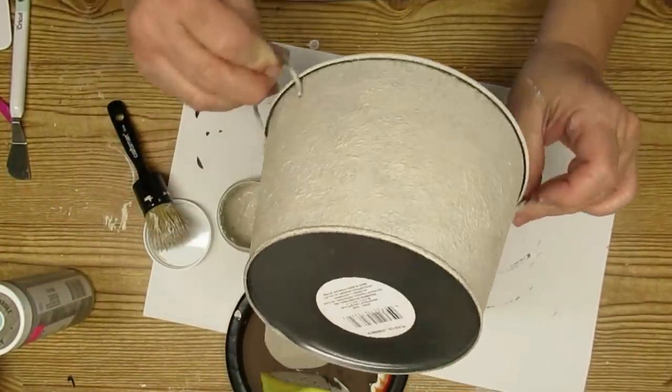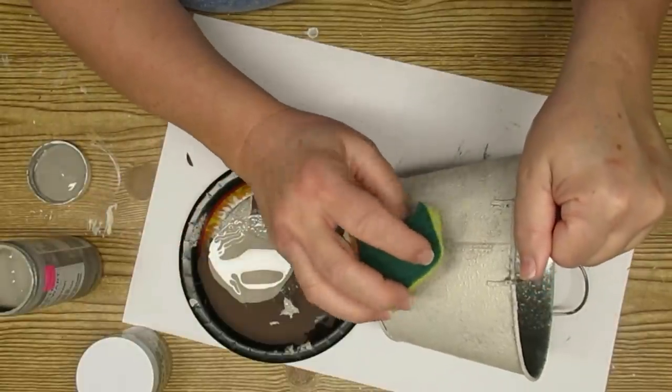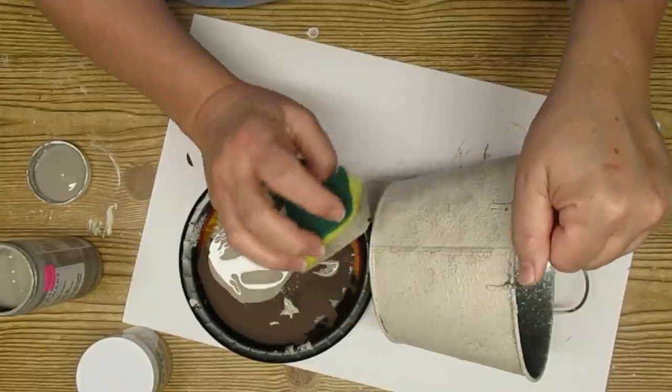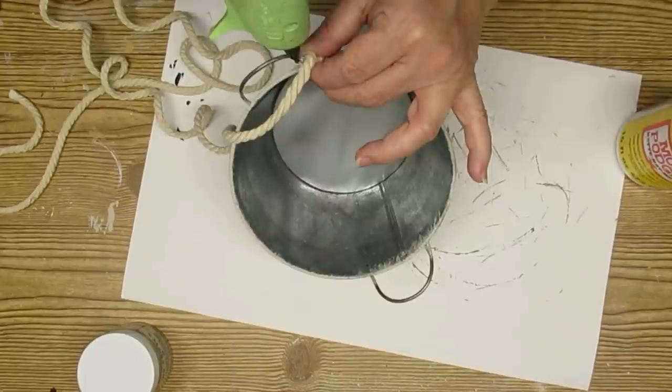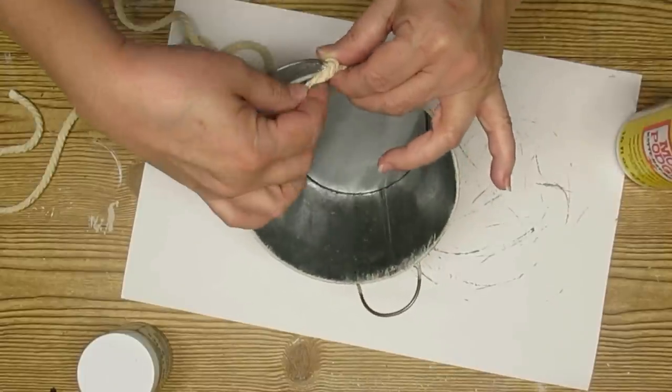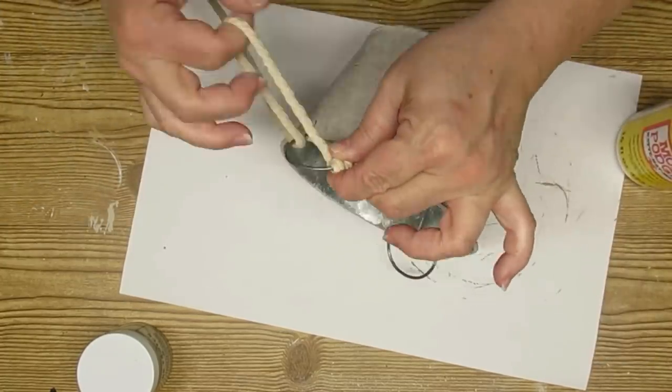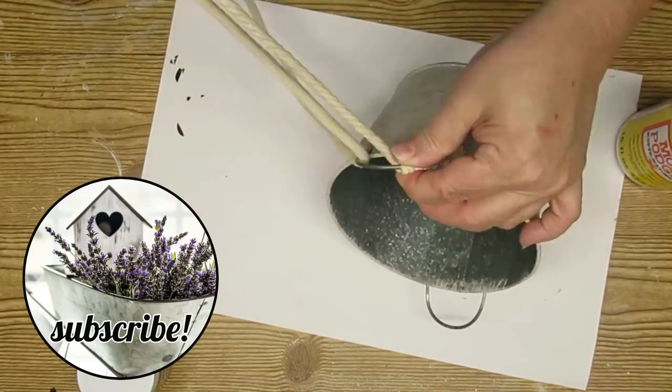Next I'm going to go back to the clay chalk paint and the sponge brush and just dab it on and blend it through so it has a little bit more color and dimension. To camouflage the metal handles, I'm using some of this white nautical rope. I'm just going to wrap it around from one end all the way to the other and secure it with hot glue.